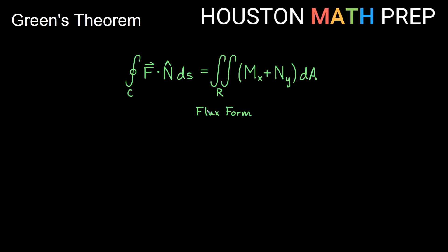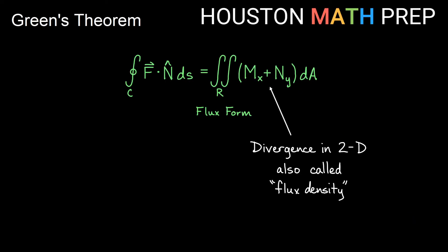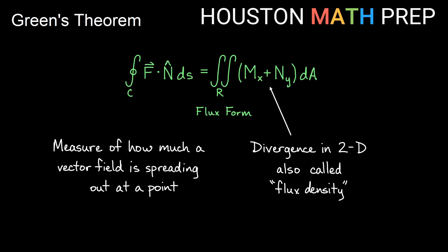Now let's look at the flux form of Green's Theorem. When we're doing a line integral in terms of flux — integral of F dot N-hat ds — over a closed curve, Green's Theorem says this equals the double integral over the region of partial M_x plus partial N_y, times dA. This is a bit of a different formula compared to the circulation form.